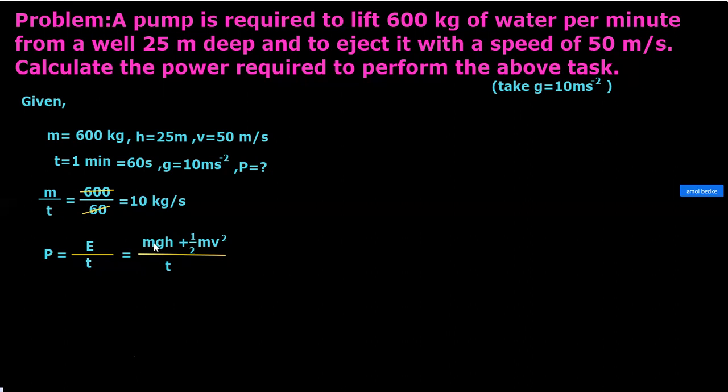From this, from numerator I am taking m and from the denominator I am taking t, so m/t I am taking outside. So m/t into bracket, what is left here? gh. So this is gh plus, m went this side, so half v².